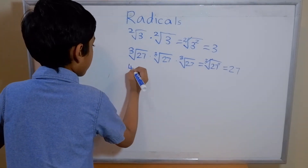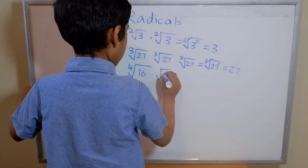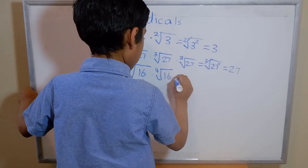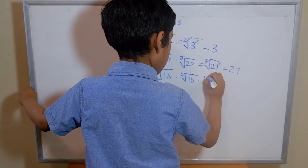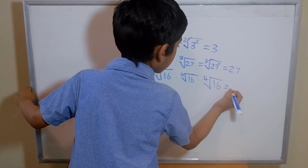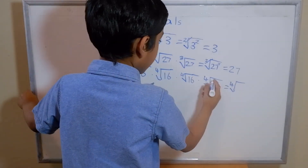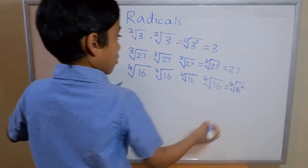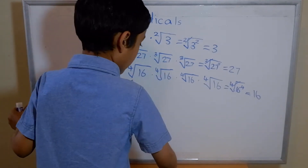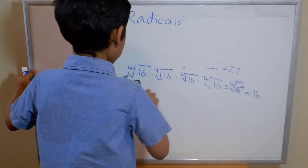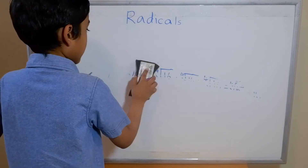Let's say we have the fourth root of 16 times the fourth root of 16 two more times — four times total. The fourth root stays the same, and 16 times 16 times 16 times 16 is 16 to the power 4. So we can cancel the exponent with the root, and we are left with 16. Usually when doing these types of problems, we don't have to do the cancelling every time — it's best to just write the result directly as 16.